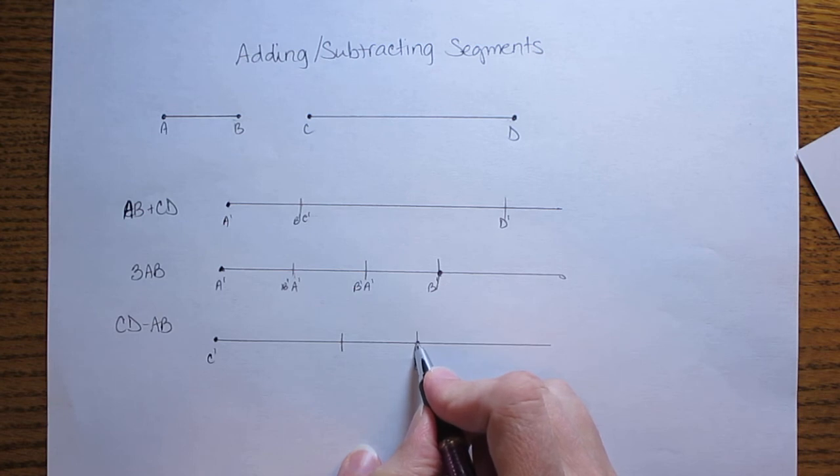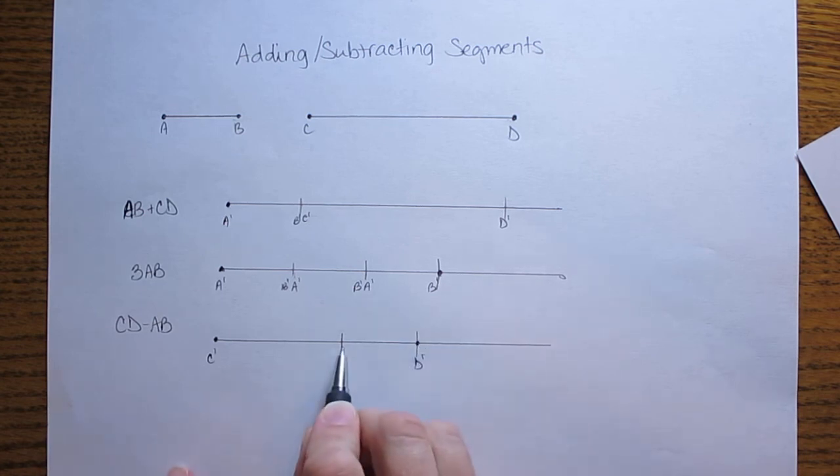So right here I'm also going to label it backwards. Instead of this being AB this will be my A prime and then B prime is right here.